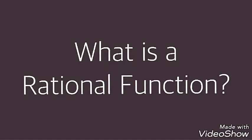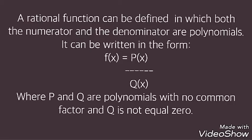We're going to talk about rational functions. So what exactly is a rational function? A rational function can be defined in which both the numerator and the denominator are polynomials. It can be written in the form f of x equals p of x over q of x, where p and q are polynomials with no common factor and q is not equal to 0.